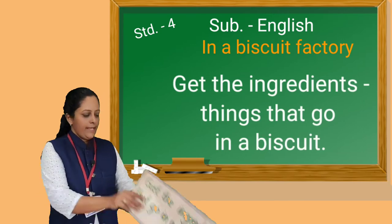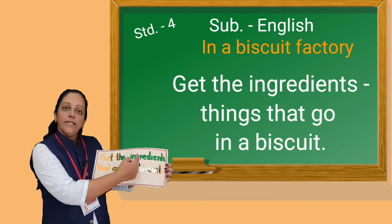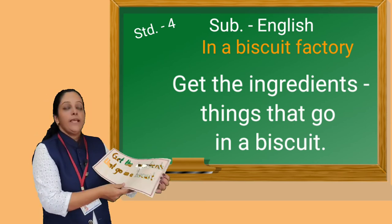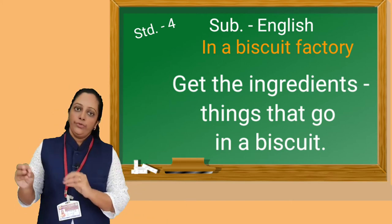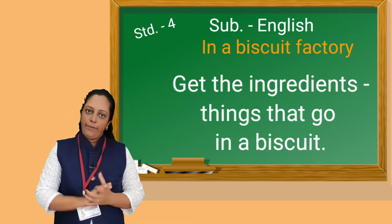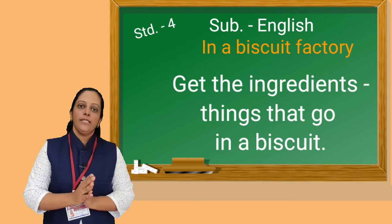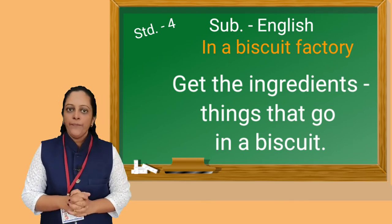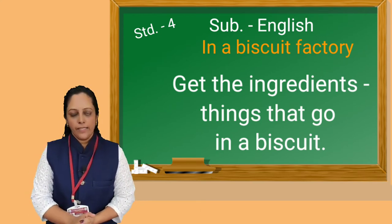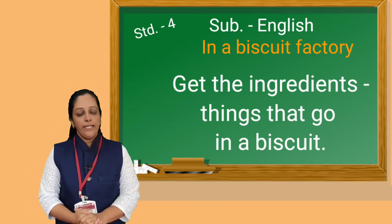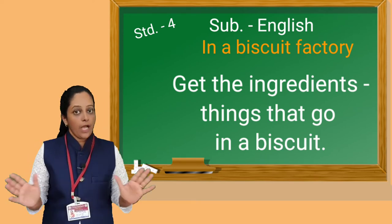And our next step is: Get the ingredients that go in a biscuit. Here we see a new word — ingredients. Ingredients means the food items which we use, which we need for cooking or preparing something to eat. With the help of ingredients, we can cook tasty food. Without ingredients, we can't cook.